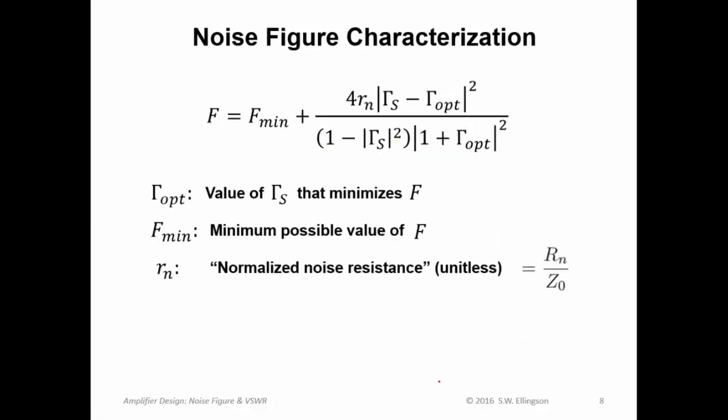What about all other values of source reflection coefficient? Well, it turns out that you can calculate that from just those parameters, F sub min and gamma sub opt. All other values of noise figure as a function of gamma sub S are given by this equation. So what you do is you calculate this expression for the particular value of gamma sub S that you actually have. And one other thing, the normalized noise resistance.